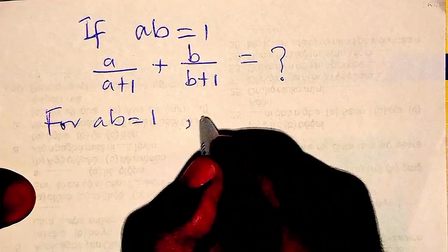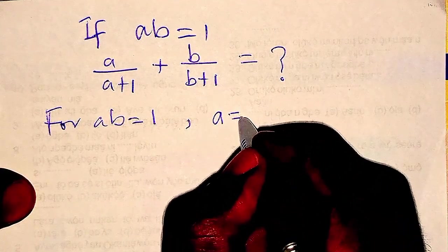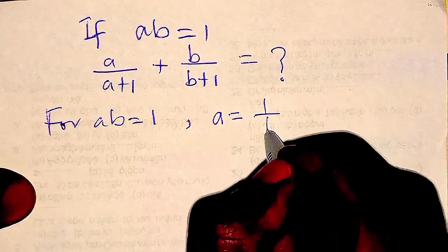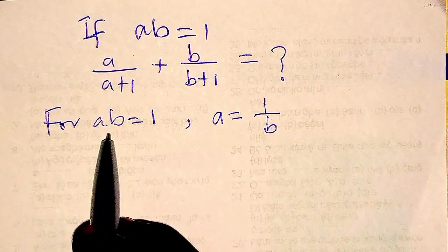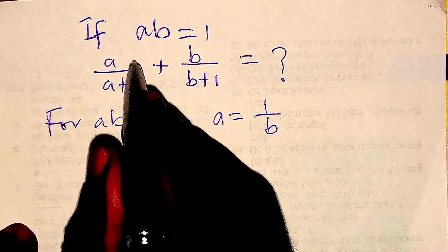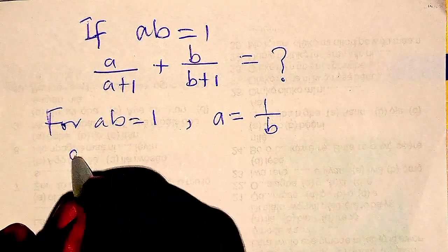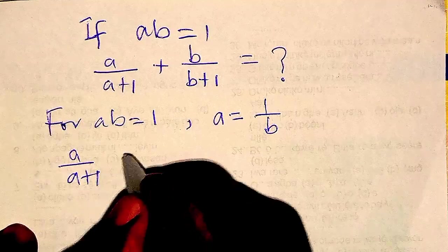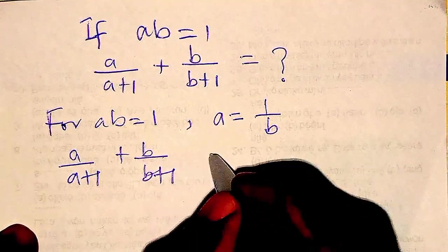Now here I can have A to be 1 over B by making a substitution formula here. I'm going to be having this. So therefore, let me bring down this. We have A over A plus 1 plus B over B plus 1.